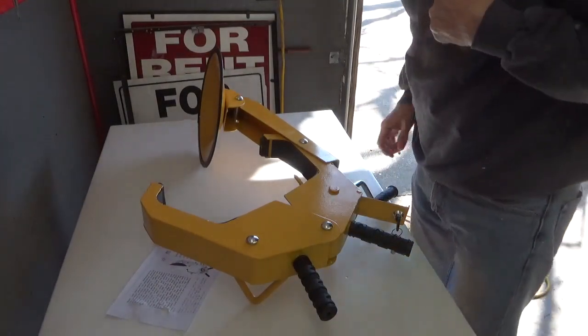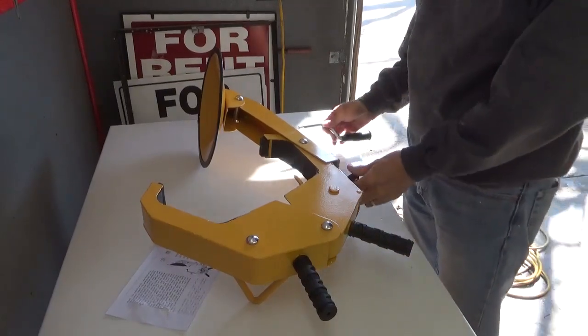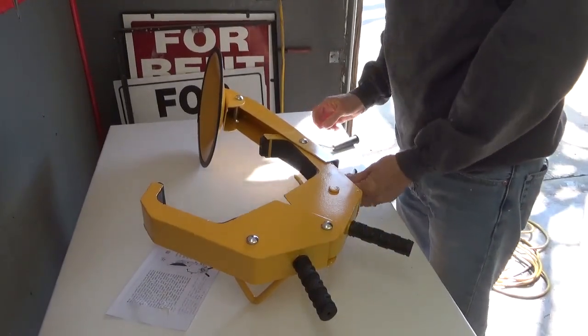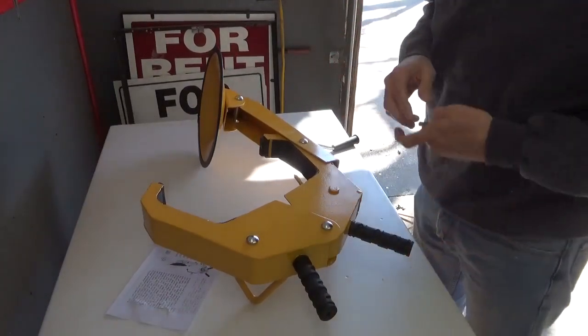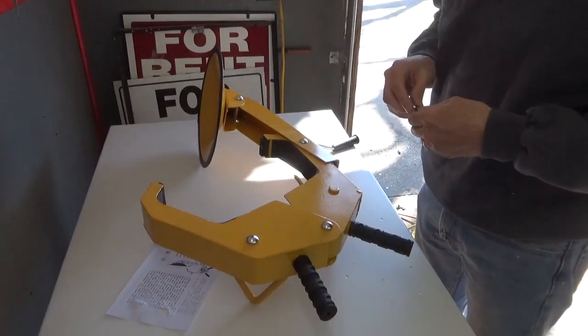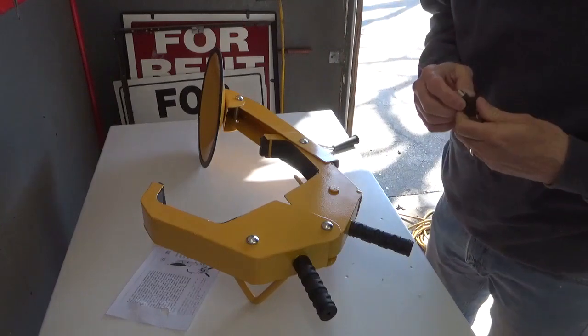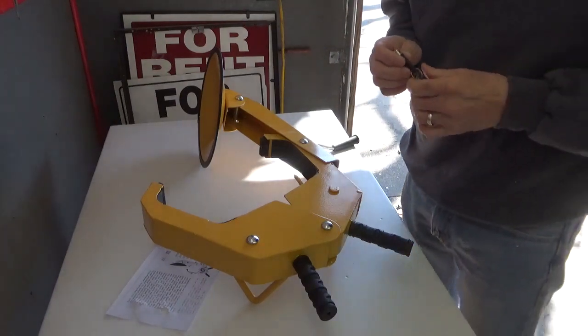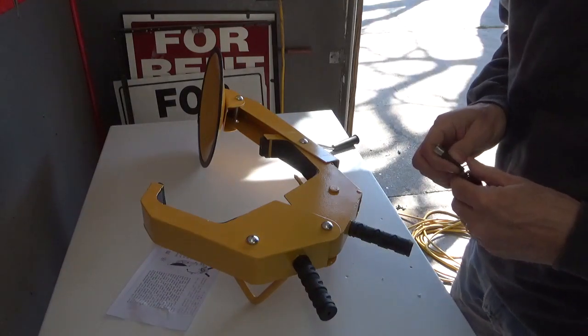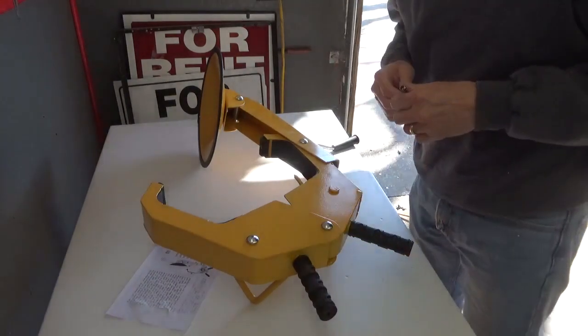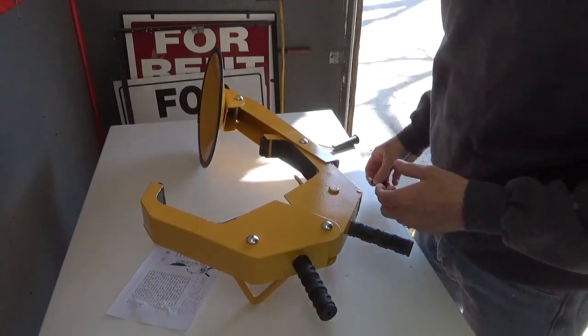And this is the assembly. And so this in conjunction with the chains and the tongue lock and things like that should slow a thief down. Perhaps they'll go on to somebody else's cargo trailer, maybe even yours if you don't have any security equipment on your trailer. So let's look at how this big monster thing works.